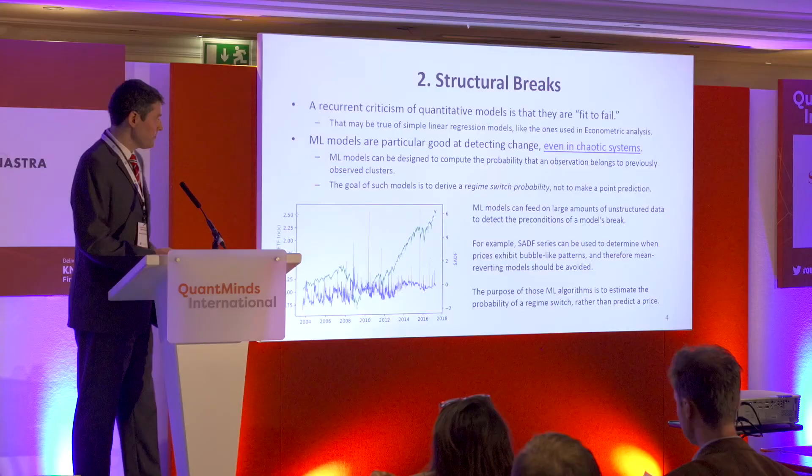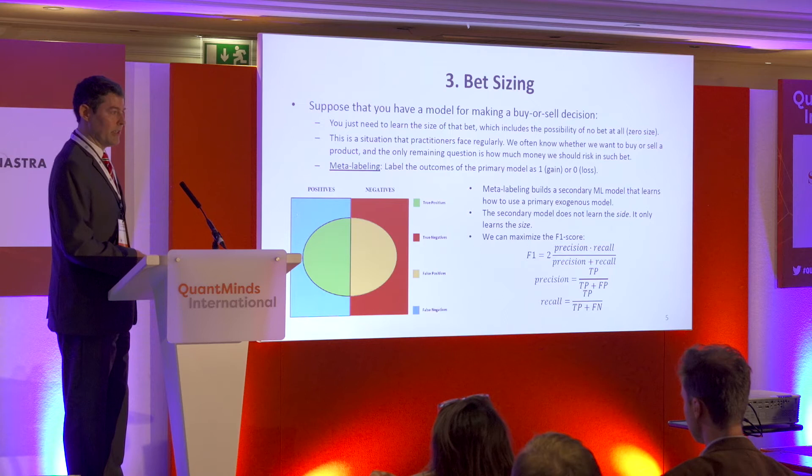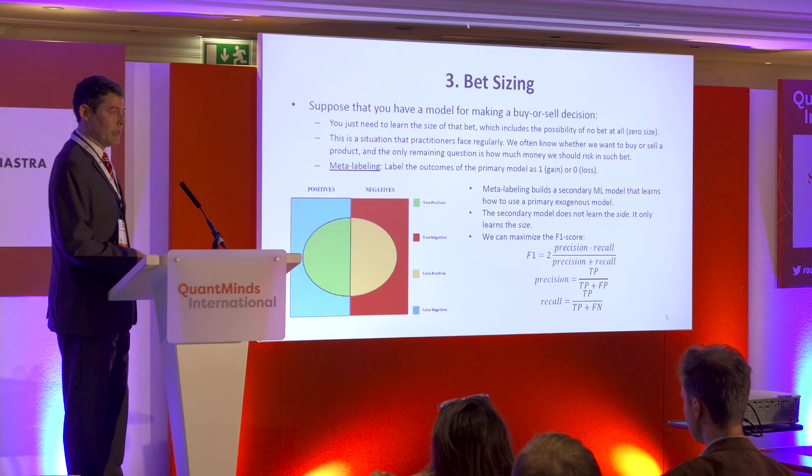Machine learning algorithms can use these variables to identify preconditions for the appearance of a bubble or bubble burst. It's not that they predict when the bubble is going to burst — they predict that a bubble is in formation, so it might be a bad idea to apply mean-reverting algorithms in that context. The third application of machine learning beyond pure price forecasting is bet sizing.